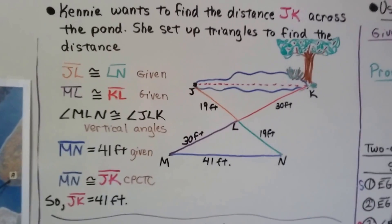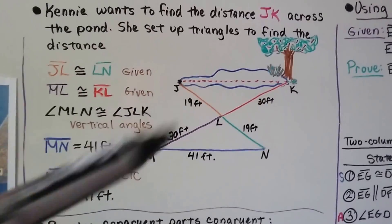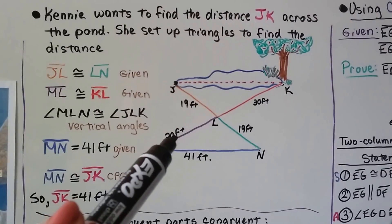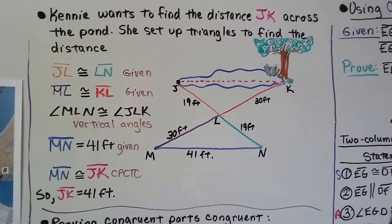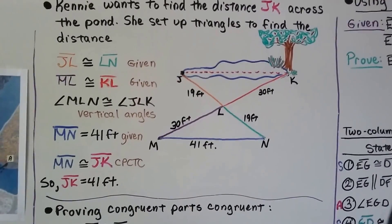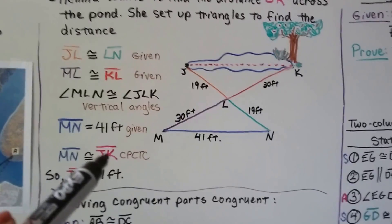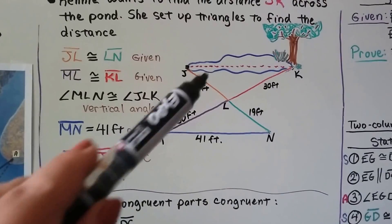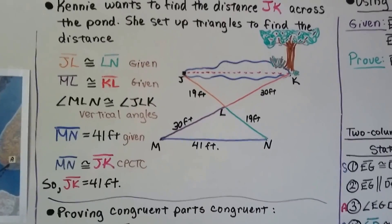Kenny wants to find the distance JK across the pond. She set up triangles to find the distance. Segment JL is congruent to segment LN — they're both 19 feet. Segment ML is congruent to segment KL, and angle MLN is congruent to angle JLK because they're vertical angles. Segment MN is given as 41 feet, so by CPCTC, segment JK is also 41 feet across the pond.